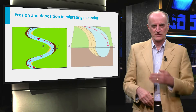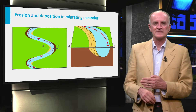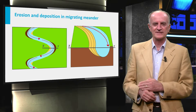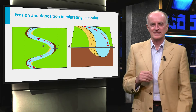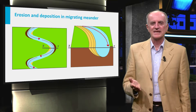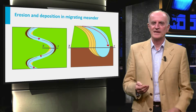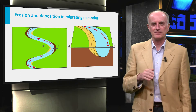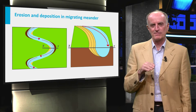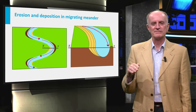In a vertical section through the meander you can see the effects. On the right-hand side you can see the sediments being eroded. On the left-hand side, sediments are being deposited with beds inclined towards the river bed.